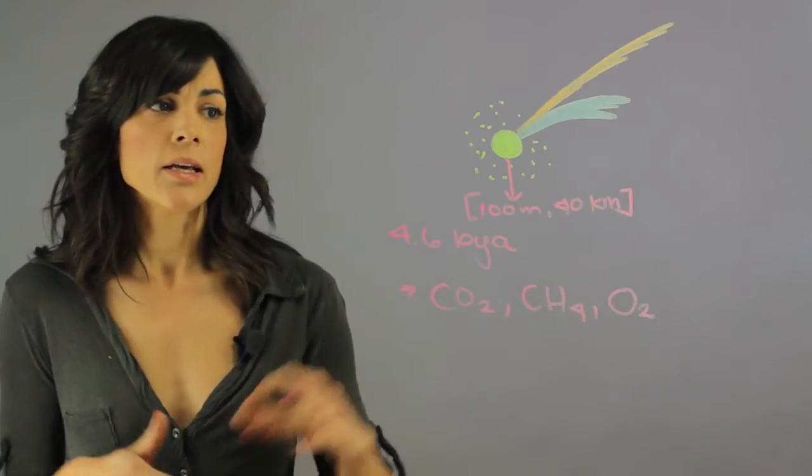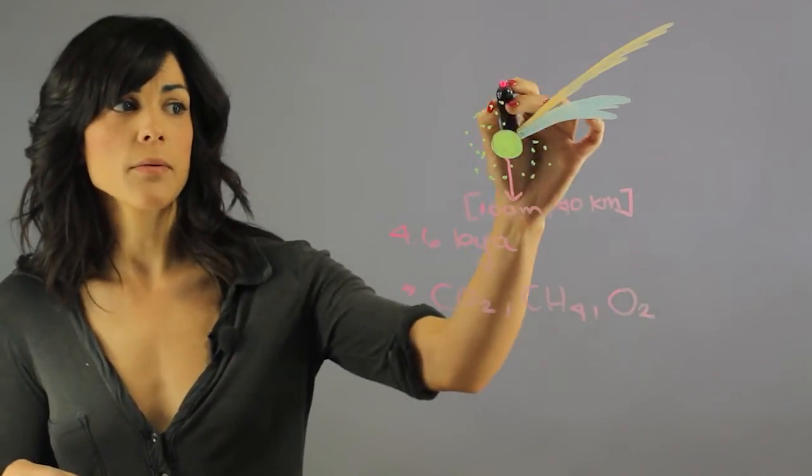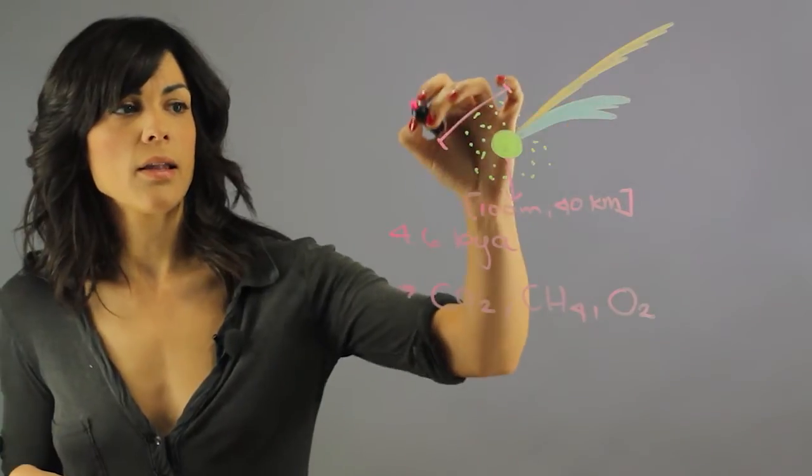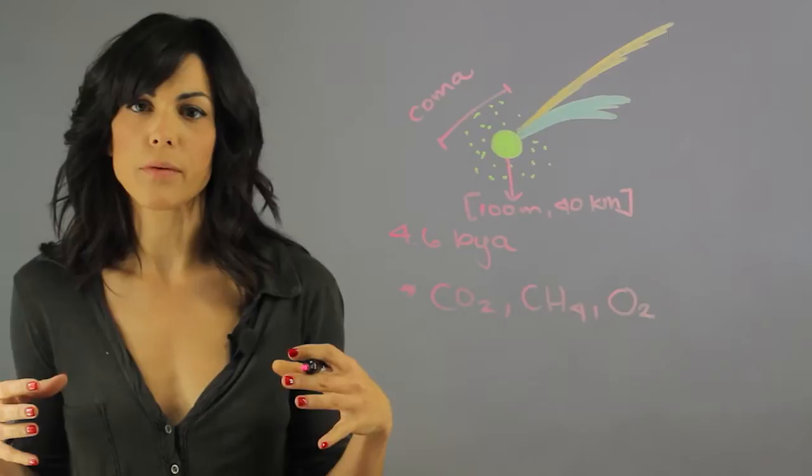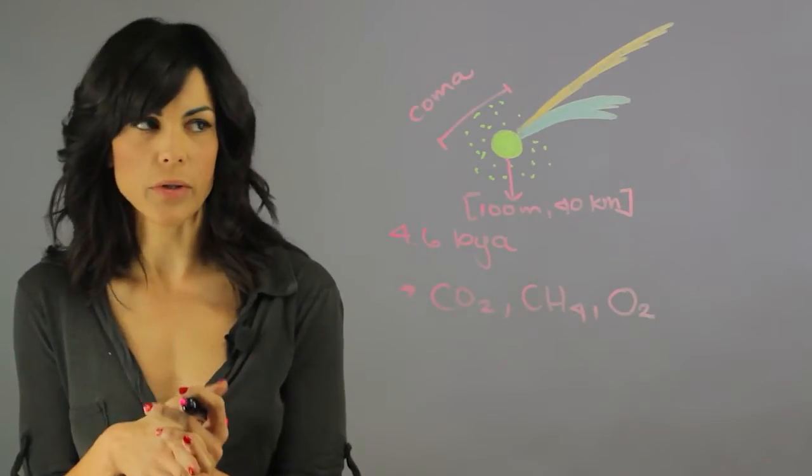The other part of the comet is the coma, and the coma is like the atmosphere, it's just a cloud of gas surrounding the nucleus.